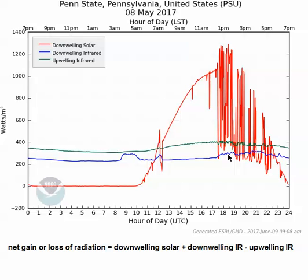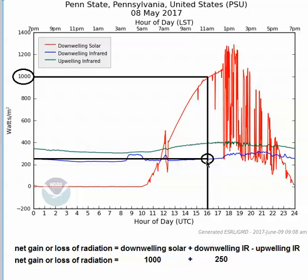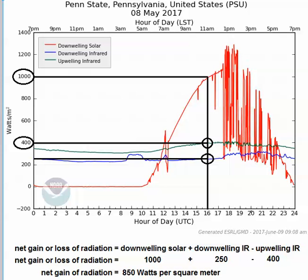So what if we want to calculate a net gain or loss of radiation at local noon? That's 16z on May 8th at Penn State — we just read our values off the graph and plug them into our equation. Incoming solar would be about 1,000 watts per square meter at 16z. Downwelling infrared radiation looks to be about 250 watts per square meter. Our upwelling infrared, marked by the green curve, would be about 400 watts per square meter, so we subtract 400 in our equation. Crunching the numbers, we end up with a positive result of 850 watts per square meter. The ground was warming up at local noon because we had a net gain in radiation — more radiation was coming in and being absorbed than was being emitted.